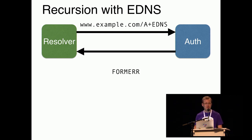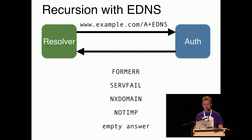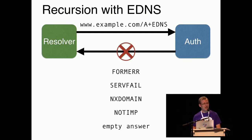We might get a format error indicating the authoritative did not understand this backwards compatible question. We might get a server failure. We might even get back that the name does not exist — a very hard situation to recover from. We asked a valid question, the authoritative said the name does not exist, and we just have to believe it. We might get not implemented, an empty answer, or — my personal favorite — a timeout.